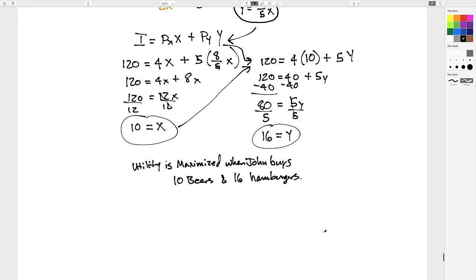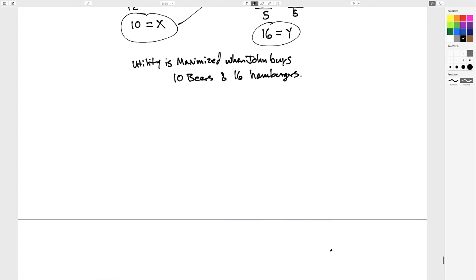Alright, now if you want to find the utility value for those, see exactly how much utility John can possibly get, you go back to your utility function, utility of X and Y is 3XY squared, remember that was given, so just plug in some numbers.